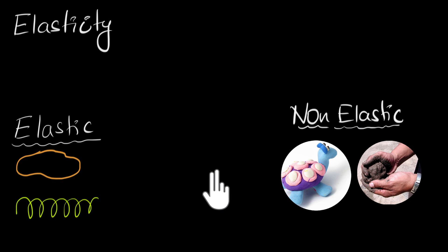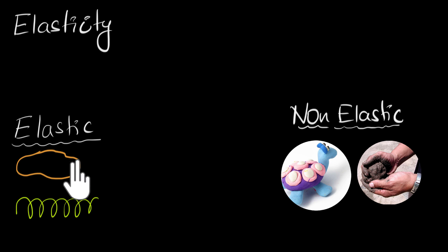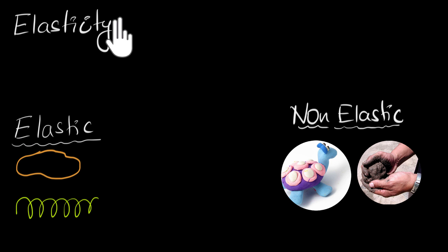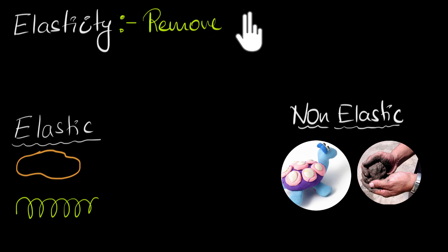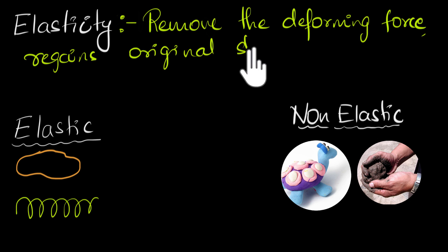Now the big question is: what is the meaning of elasticity? Why do we call these things elastic and these things non-elastic? The main idea is that if you take a rubber band and stretch it — you deform it — and then if you let go of the deforming force, it snaps back to its original shape. Same with the spring. However, if you take clay or mud and deform it by putting some force, and then remove that deforming force, it doesn't snap back. Its shape has changed permanently — and that's what allows us to make beautiful dolls using clay. So elasticity is a property due to which, when you remove a deforming force, the material regains its original shape.